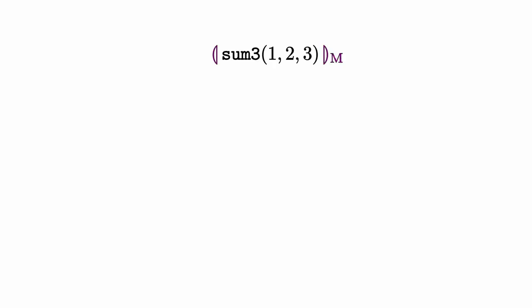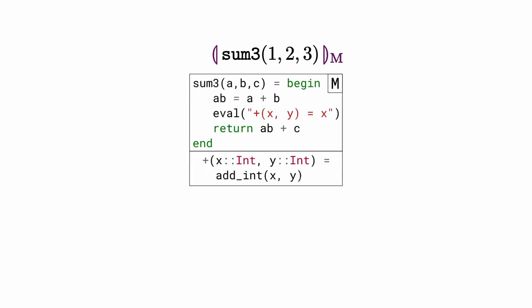For example, consider a local call to sum3 within table m, which contains integer addition and sum3 itself. When sum3 is called with integer arguments, like in the example, we know that both calls to plus have to be dispatched to the integer addition.